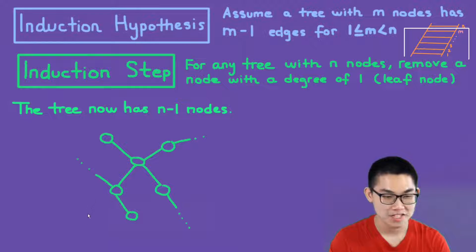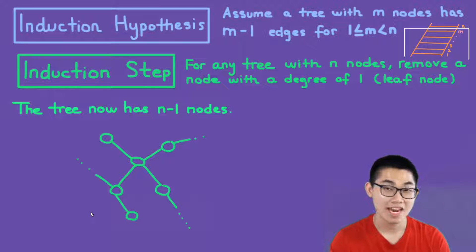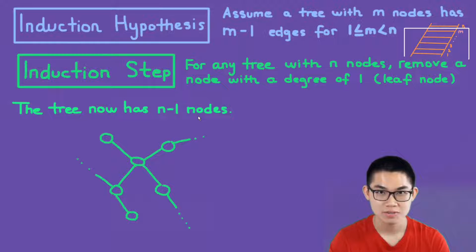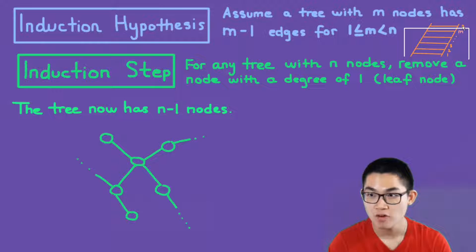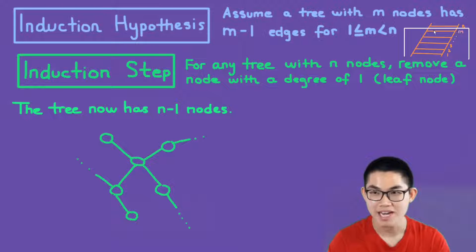So we remove this node. We remove it. We take it outside of the tree. Before it has n nodes. Now it has n minus 1 nodes. So basically we were here, we were at n, right? Now we move back to n minus 1. So we move down the ladder and we are inside this box now.